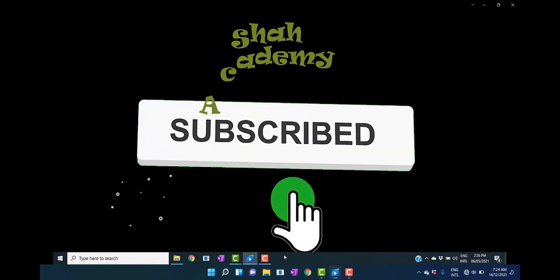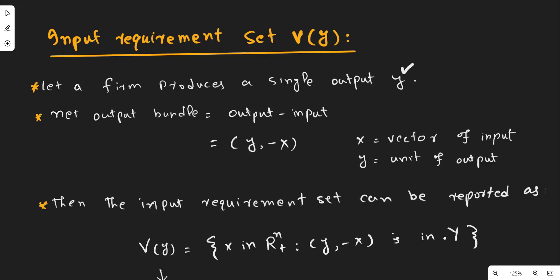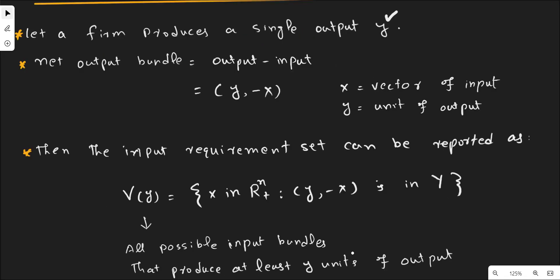The production possibility set consists of this production plan as well as all other production plans. It contains all short-run, long-run, optimal, and sub-optimal plans — all possible production plans. So this is one plan in which the output and the input requirements are specified, and it belongs to the production possibility set.